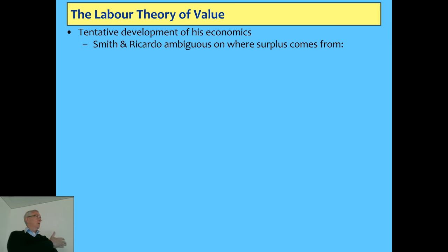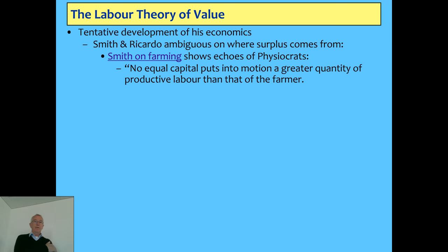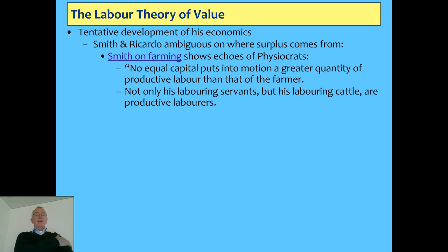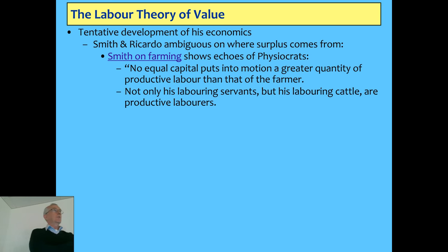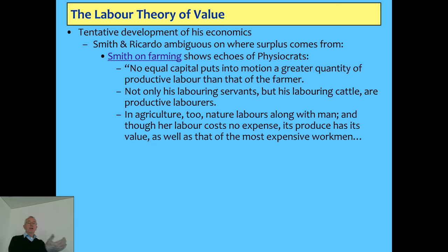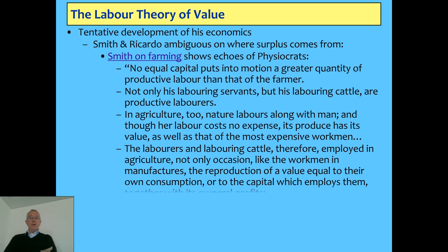These are his first attempts to read English political economy in 1844. Where Smith and Ricardo spoke about where surplus comes from, Smith on farming does show some elements left over from the physiocrats. Smith says no equal capital puts into motion a greater quantity of productive labour than that of the farmer — not only his laboring servants, but his laboring cattle, the productive laborers. In energy terms that's true: you can use animals to get to free energy, the surplus above their own needs to stay alive is what they can do as work on the farm. And then he says nature labors along with man, but the labor costs no expense — the same thing the physiocrats were saying.